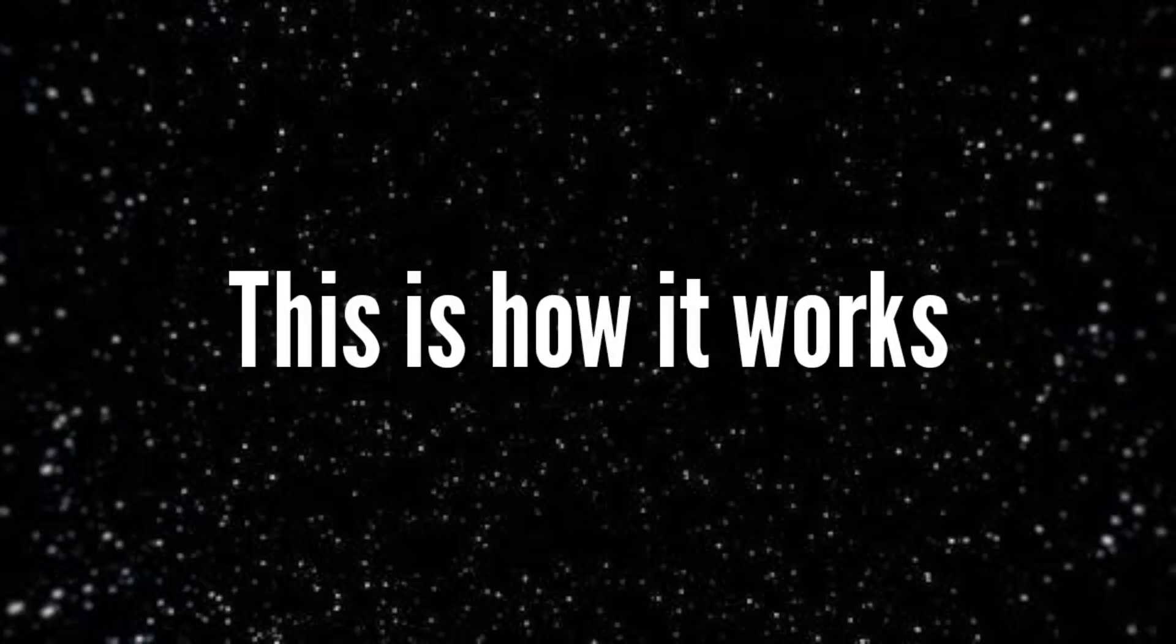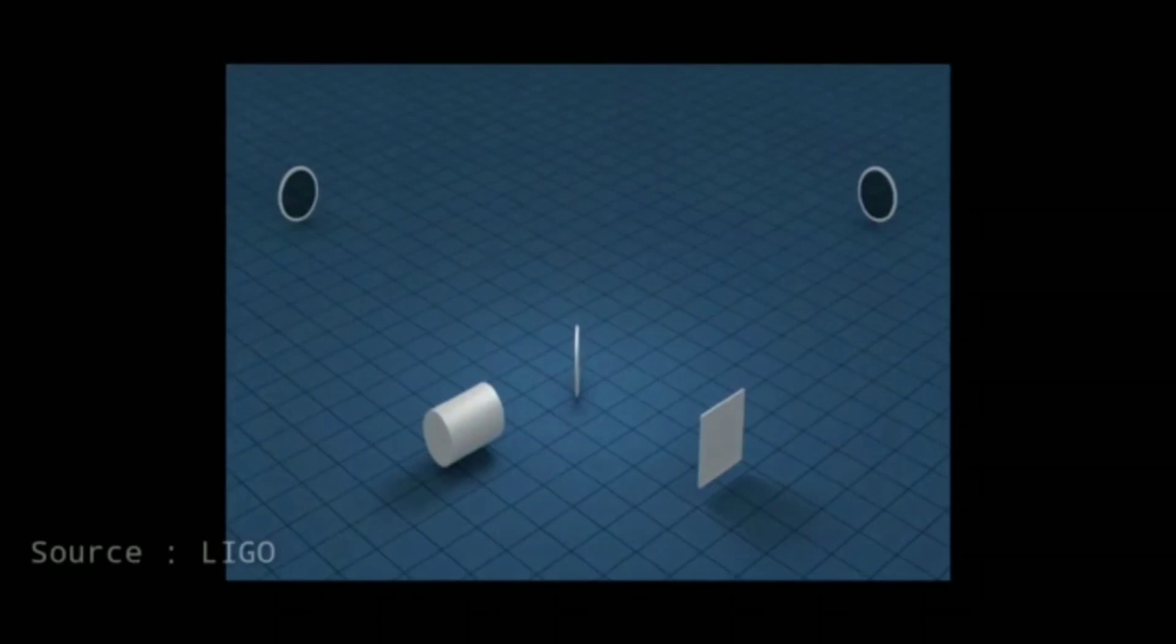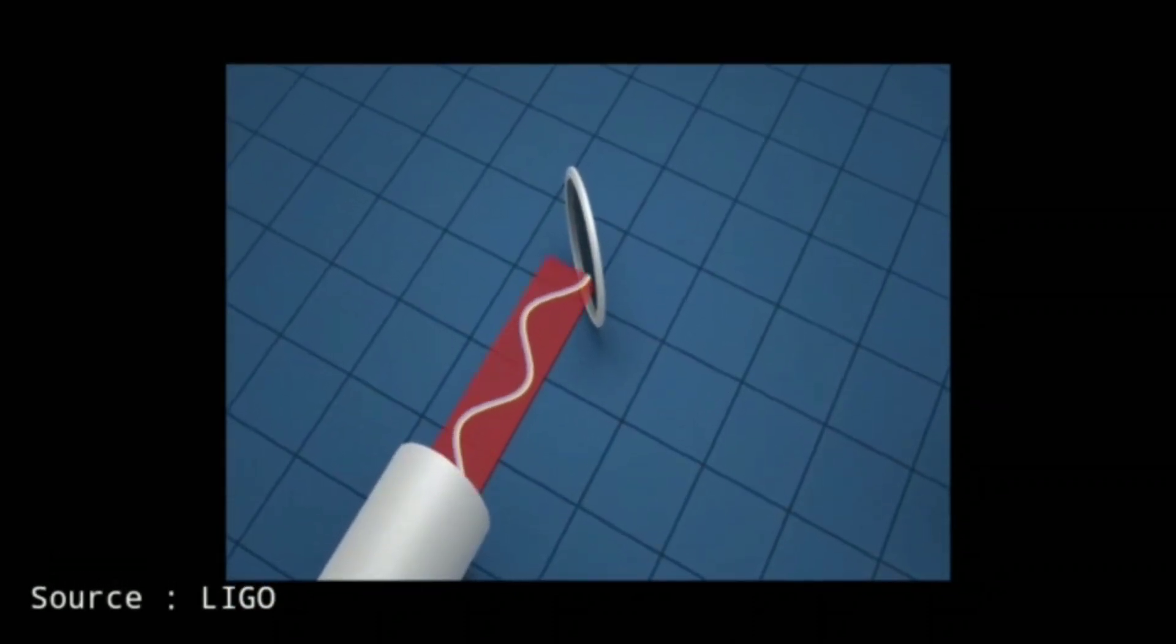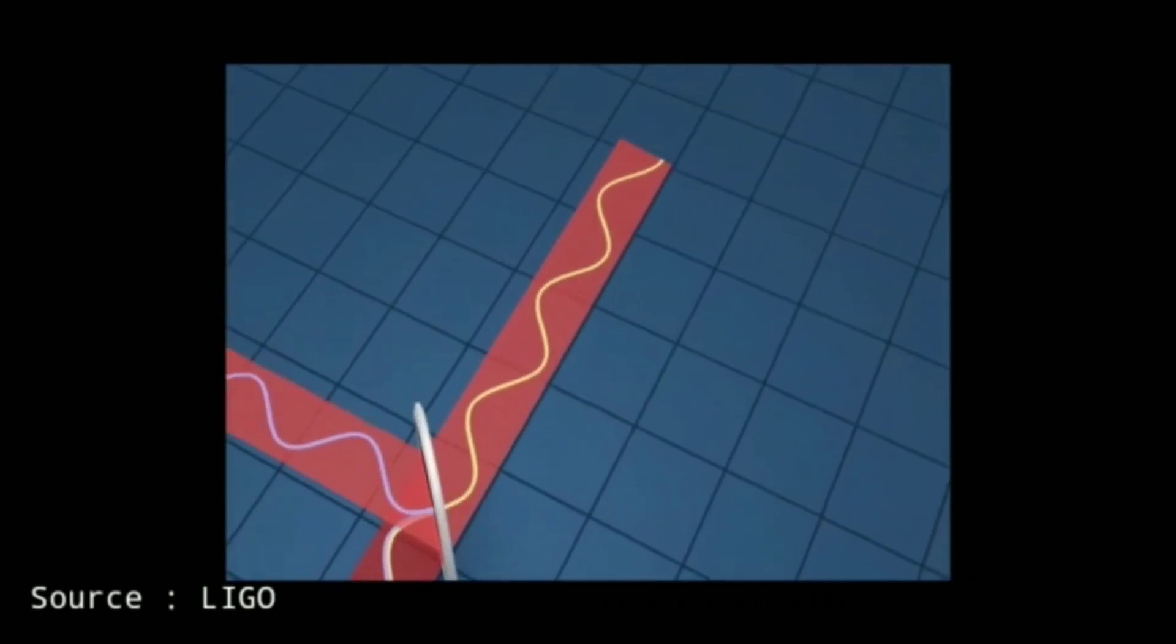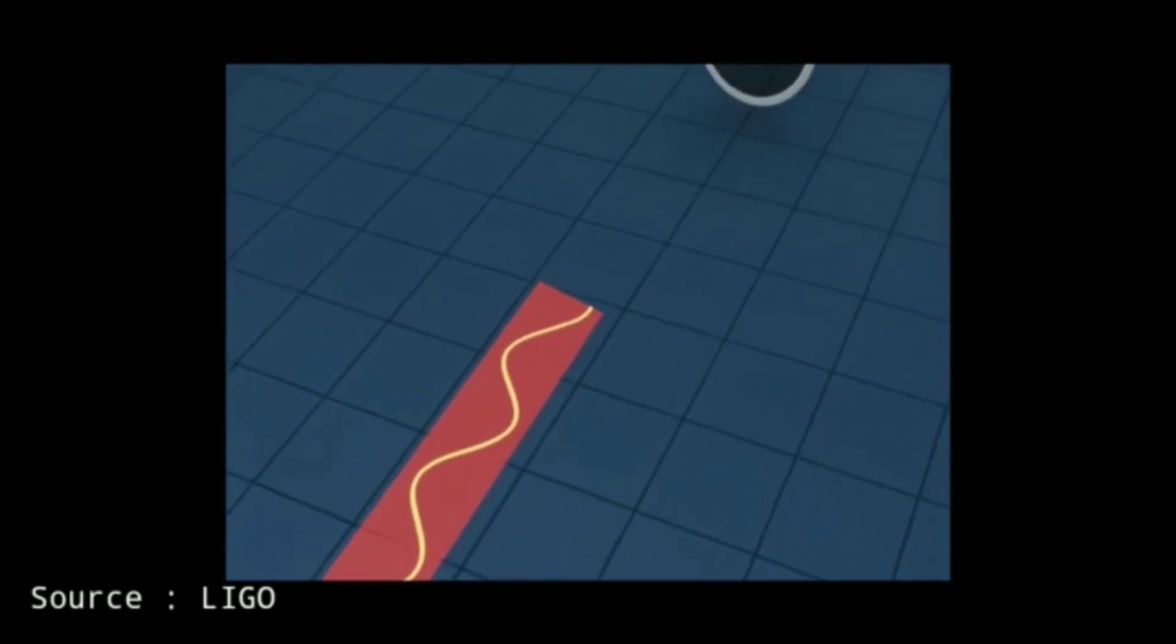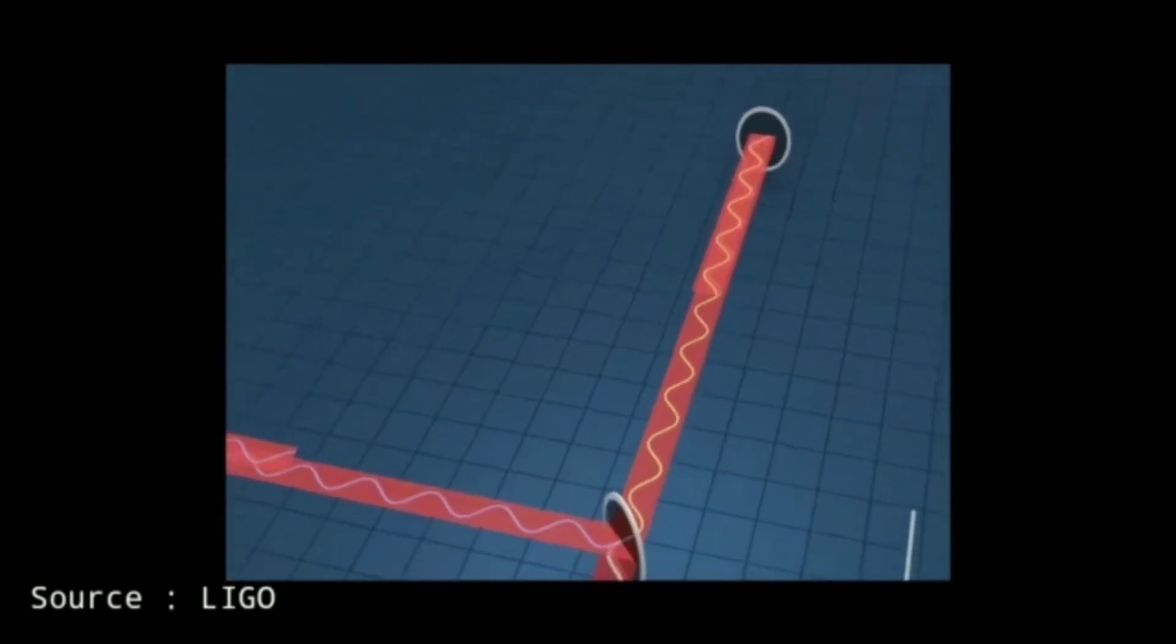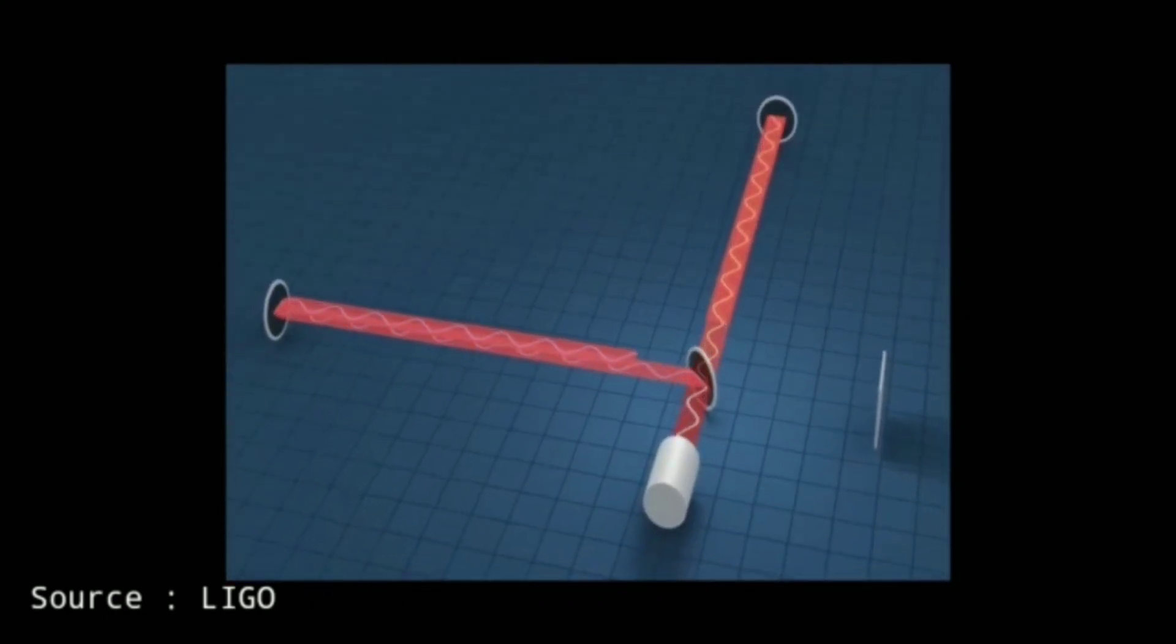This is how the setup works. In the middle there is a beam splitter, and here is a laser which shoots light and it gets split. The wiggly thing in it is the electromagnetic wave making the light. It then reflects back from the end mirrors and comes back to the beam splitter.